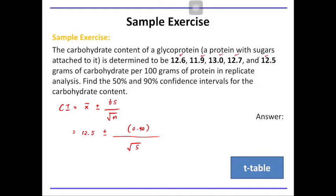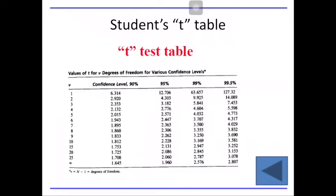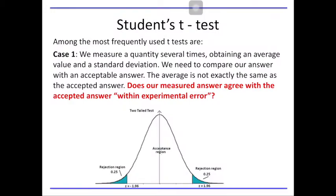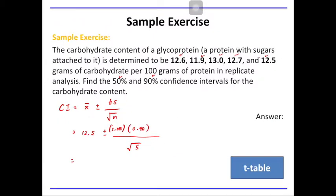The value of t at 50% and 90% confidence intervals is provided in the t-table. At 90% confidence interval and 5 measurements, we have 2.015 as our value for t. All you need to calculate is the value of this expression: we have 12.5 plus or minus 0.4 grams.